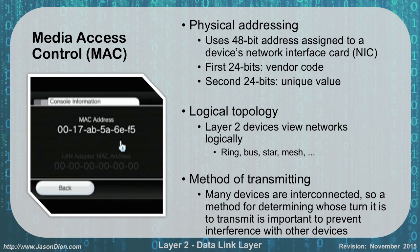The first 24 bits, which is the first six characters, is going to be your vendor code. The last six digits, which are the last 24 bits, are a unique value for that particular card. Even though we're saying 24 bits and you only see six characters, the reason is because we're using hexadecimal characters. Every hexadecimal character is worth four bits, and we'll cover that when we talk about binary, hexadecimal, and decimal numbers in a later module.